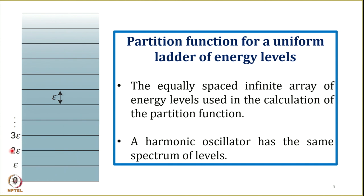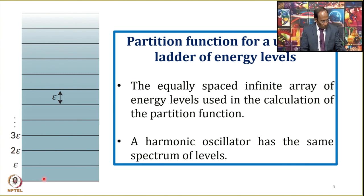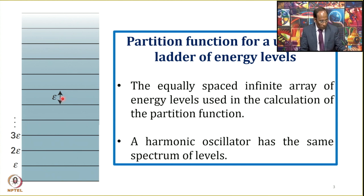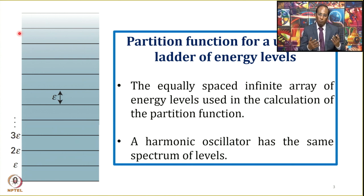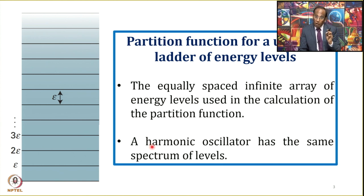A uniform ladder of energy levels is a set of energy levels in which the spacing between adjacent energy levels is the same — call it E or epsilon. The ground state is 0, then the first is E, second is 2E, third is 3E, and so on. An example is a harmonic oscillator when talking about vibrational energy levels of diatomic molecules, which will have that same uniform spectrum of energy levels.